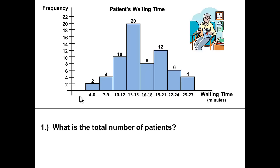The first question wants to know what is the total number of patients. To get this we will simply add up the frequency in each class. 2 plus 4 plus 10 plus 20 plus 8 plus 12 plus 6 plus 4 to get 66.